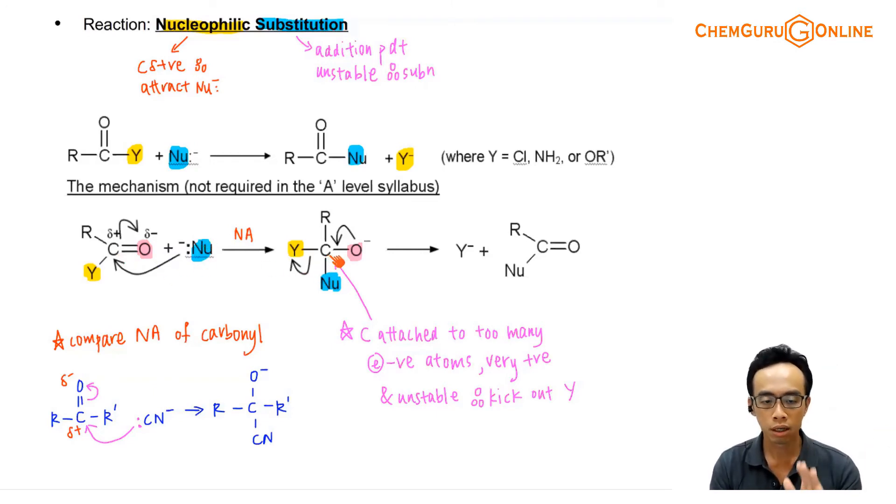Now this carbon says that, okay, I am not stable, I am attached to too many electronegative species, so if I just continue to stay saturated, then I will be very positive, and therefore I will be unstable. So what I prefer to do is, I want to kick out one of the electronegative groups, I don't want to be attached to too many electronegative things.